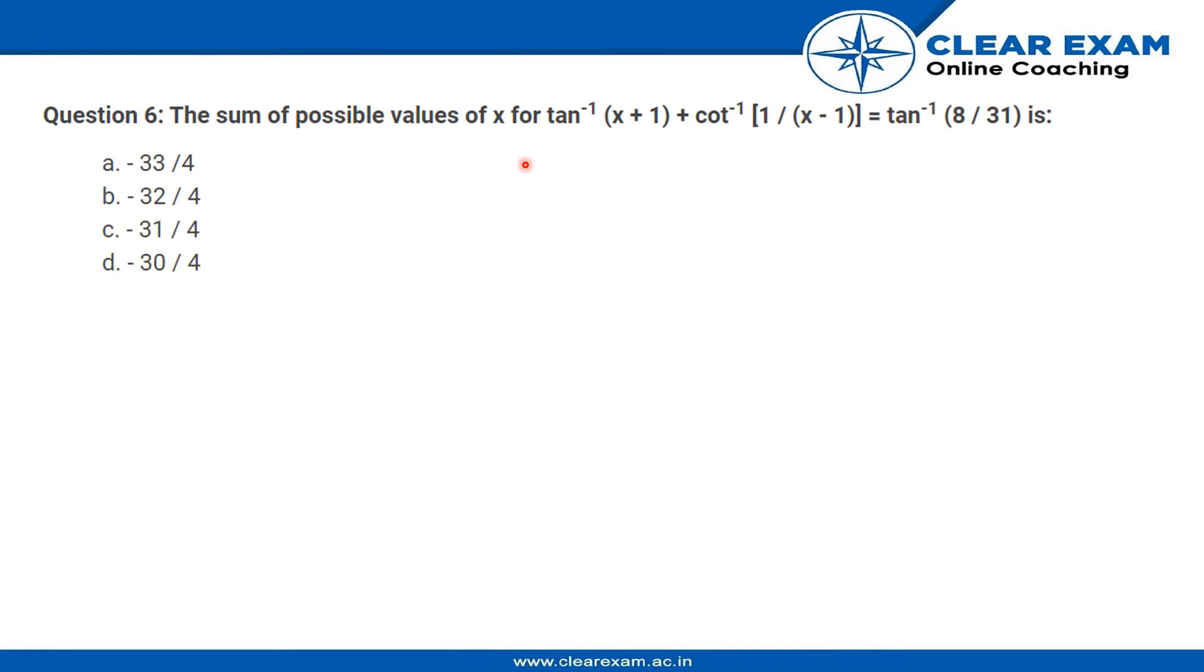Now how do we solve this equation? We can write this as tan inverse of (a + b) upon (1 - ab) which is equal to... now when we take tan on both sides, this tan inverse and this tan inverse will get cancelled.